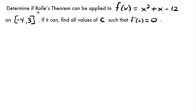If we can apply the theorem, we want to find all values of c such that the derivative at that point c is equal to 0. When trying to determine if Rolle's theorem can be applied, we need to remember what it says: if the function is continuous and differentiable on the interval and the y-values at both endpoints are the same, then there must be at least one value of c where the derivative is 0.